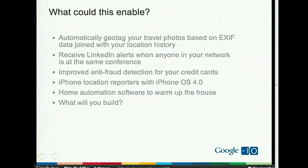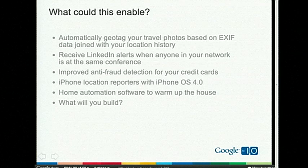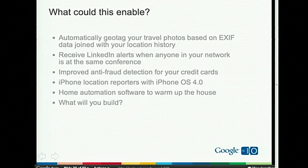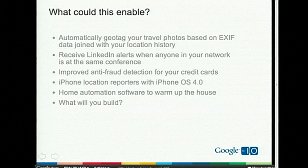What does this enable? We're really excited about the possibilities. One popular example: you go on a trip to Europe, take a thousand photos, come back, authorize a service to access your Latitude location history and Picasa web albums, and suddenly your thousands of photos are automatically geotagged to the exact point where you were when you took them. You could get alerts when coworkers are at the same conference. With iPhone OS 4.0 now allowing background location, multiple background location reporters could push location into the cloud, and any web service can query the Latitude API for that location even if the app isn't running.